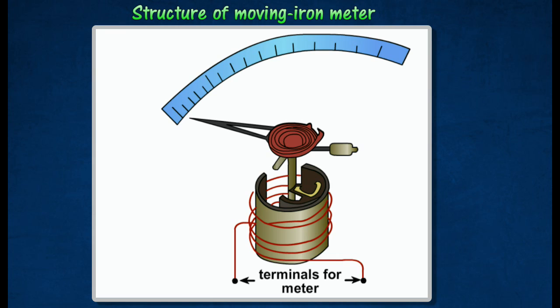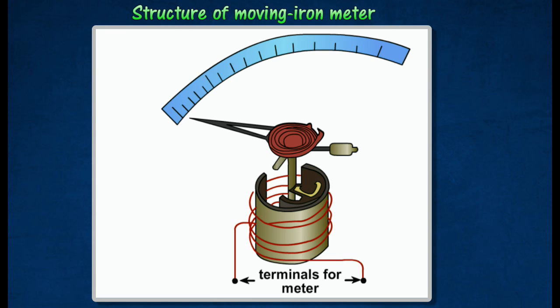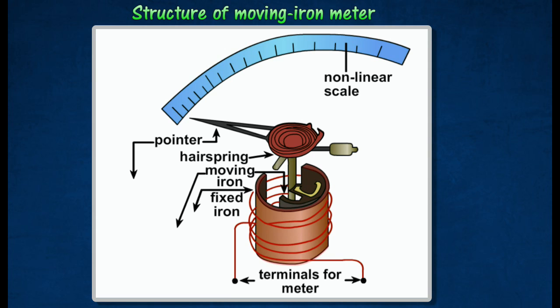The following diagram shows the basic structure of moving iron meter. The moving iron meter consists of a coil inside, which contains two soft iron circular bars. The larger bar is fixed. The smaller bar is attached to an axle pivoted on jeweled bearings.